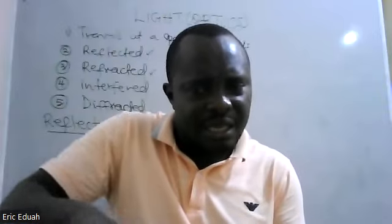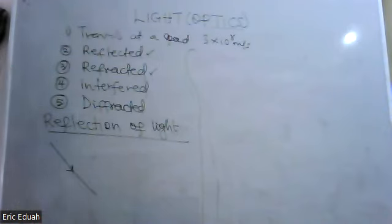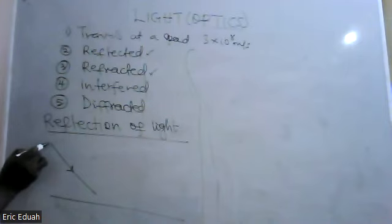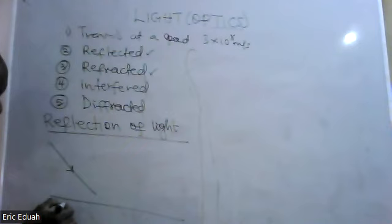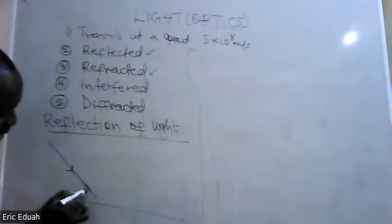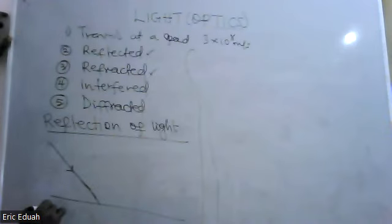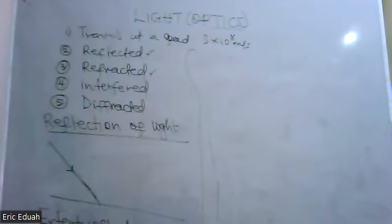The nature of the reflection depends on some factors. The first factor is the nature of the second material. Light travels in a straight line within the same medium — a homogeneous material. Once it hits another material, there will be reflection. The extent of reflection depends on several factors.